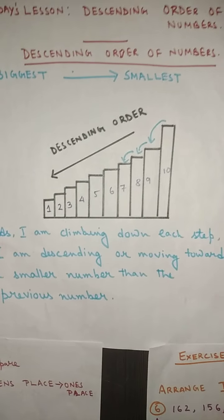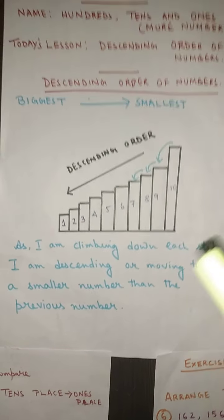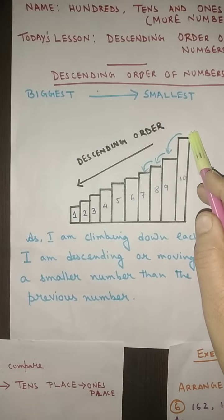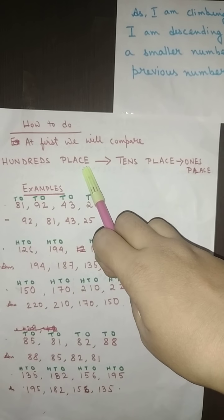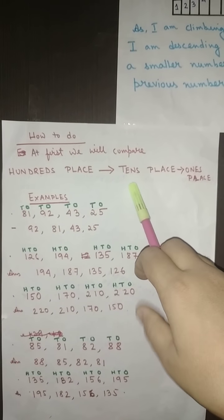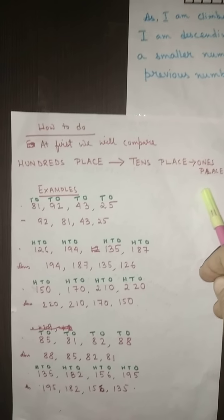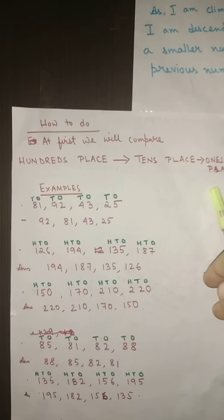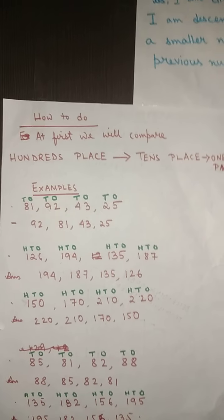Descending order means we have to arrange the numbers from biggest to smallest. Now how will we do this? First we have to compare the digits of the hundreds place, then we have to compare the digits of the tens place, and finally we have to compare the digits of the ones place.